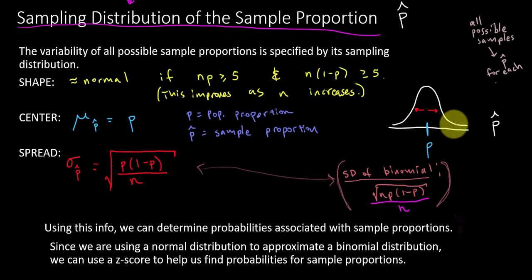And now that we know that sample proportions under certain circumstances can follow a normal distribution approximately, then we can find probabilities associated with sample proportions. We're going to do that by, because we're in a normal world, we can use a z score to help us find probabilities. We'll also see how we do this in R.